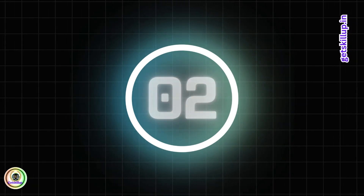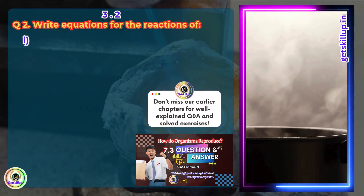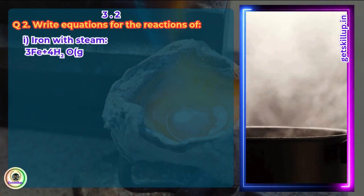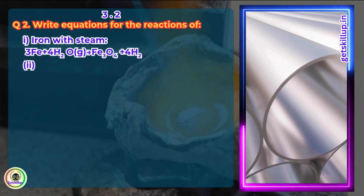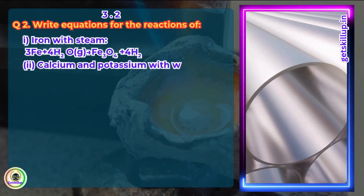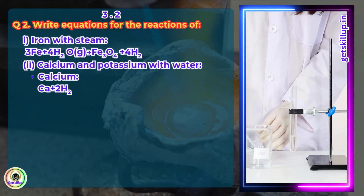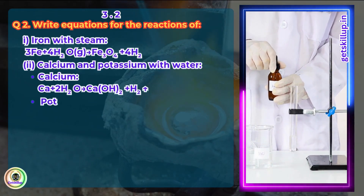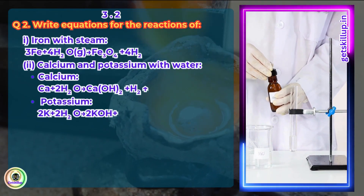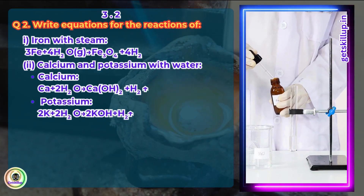Question 2. Write equations for the reactions of iron with steam, calcium and potassium with water. Iron: 3Fe + 4H₂O → Fe₃O₄ + 4H₂. Calcium: Ca + 2H₂O → Ca(OH)₂ + H₂. Potassium: 2K + 2H₂O → 2KOH + H₂.